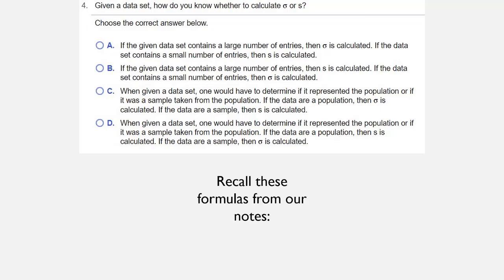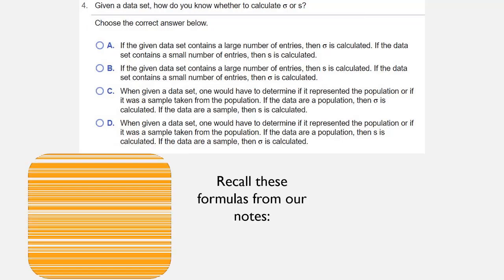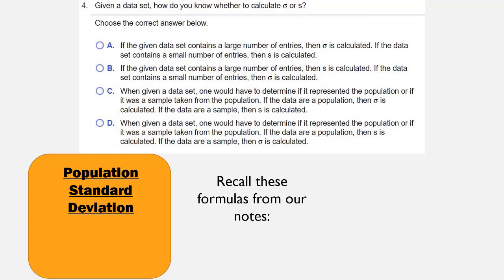So let's recall these formulas from our notes. We have a population standard deviation formula of sigma equals the square root of the sum of x minus mu squared divided by capital N.